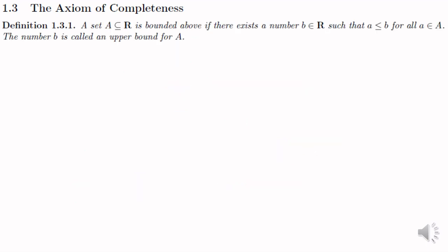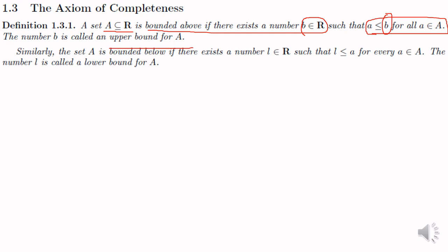So we can say that the set A is bounded below and minus 4 is a lower bound of the set A. Formally: A subset of R is bounded above if there exists a number B in R such that a ≤ B for all a in A — then B is called the upper bound. Similarly, A is bounded below if there exists L in R such that L ≤ a for every a in A — then L is called the lower bound of A.